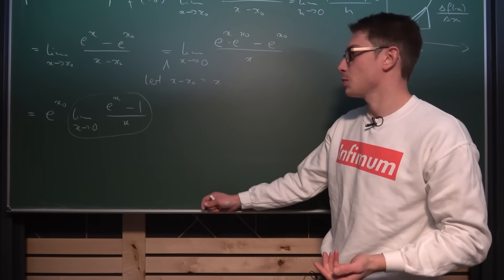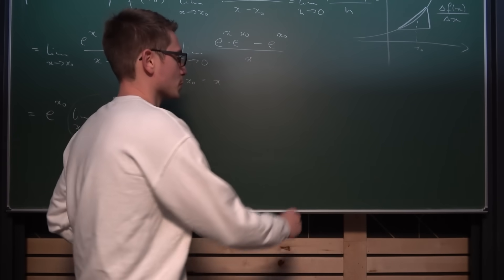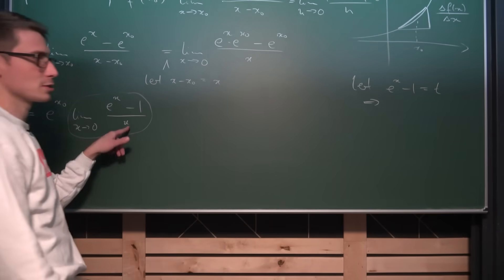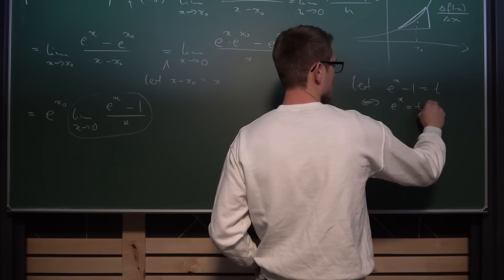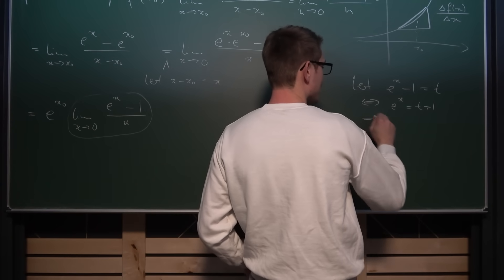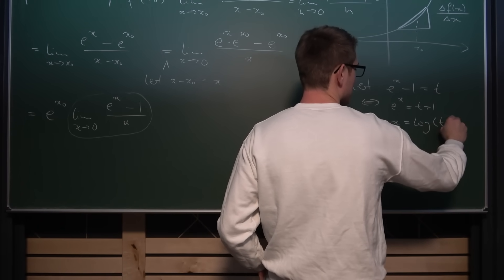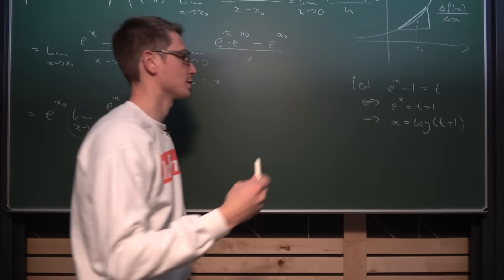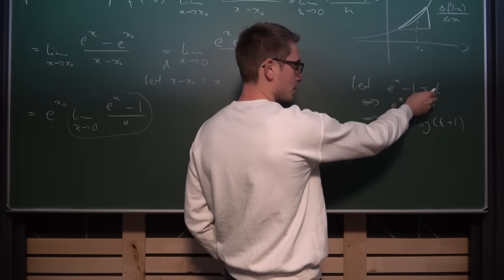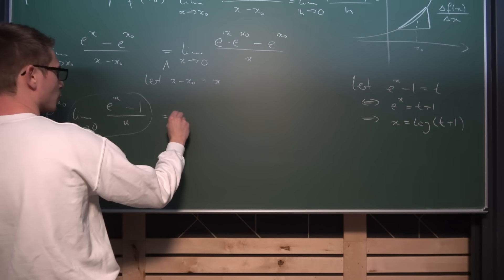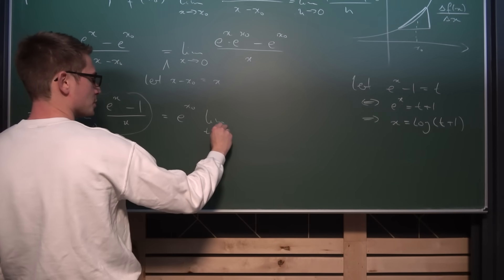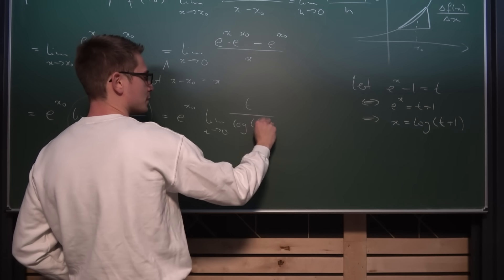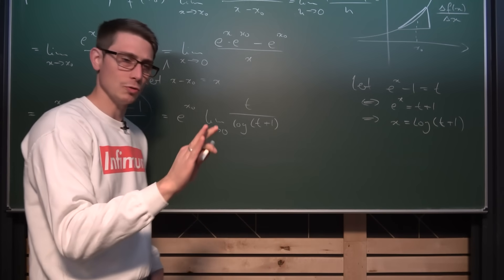We are going to manipulate this further. First, let's substitute: let e^x minus 1 equal t. Solving for x gives us e^x equals t+1, and taking the natural log of both sides gives x equals ln(t+1). Now as x goes to 0 in our limit, t also goes to 0. This leaves us with e^(x0) times the limit as t approaches 0 of t divided by ln(t+1).